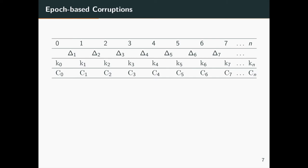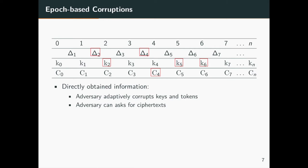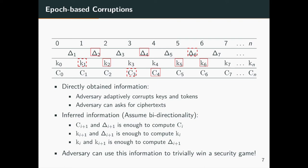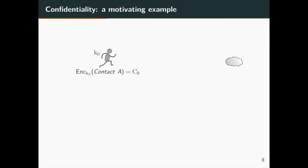In a security game, the environment provided by the challenger attempts to give as much power as possible to an adversary. The adversary may corrupt keys and tokens, and may ask for ciphertexts stored in the cloud. Additionally, the adversary can infer some information using known knowledge. For example, if the adversary knows two consecutive keys — key 5 and key 6 — then she can compute the update token, token 6. When we consider the win condition of a security game, we should account for this knowledge, because the adversary might apply it to trivially win the game.